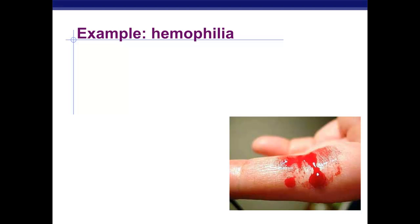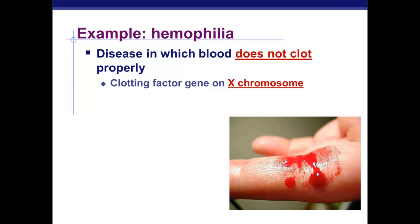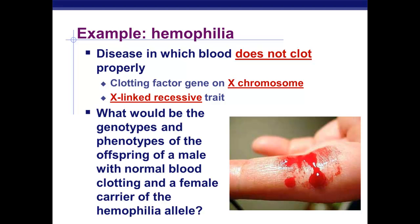So here's an example so we can practice our Punnett squares with sex-linked traits. Hemophilia is a disease, which blood does not clot properly, so you just bleed uncontrollably. And the clotting factor gene that makes your blood clot properly is on the X chromosome. So this is an X-linked recessive trait like we've been talking about. So I'd like you to try to draw a Punnett square to figure out what would be the genotypes and phenotypes of the offspring of a male who has normal blood clotting and a female who's a carrier of the hemophilia allele. I'll give you a moment here to draw your Punnett square and try to figure it out.